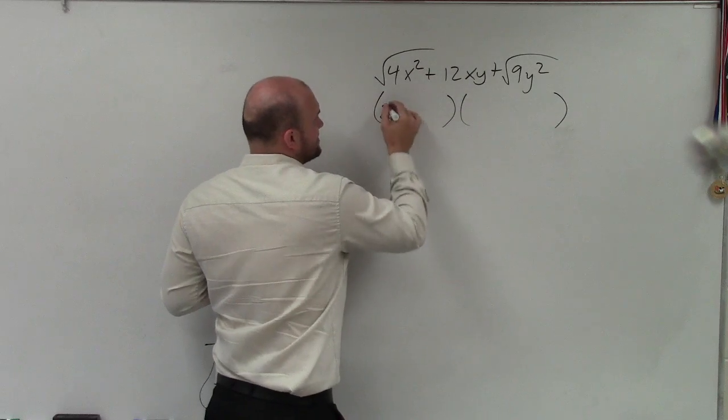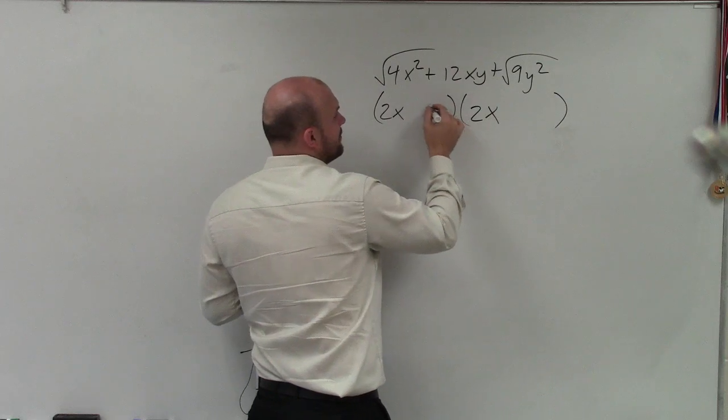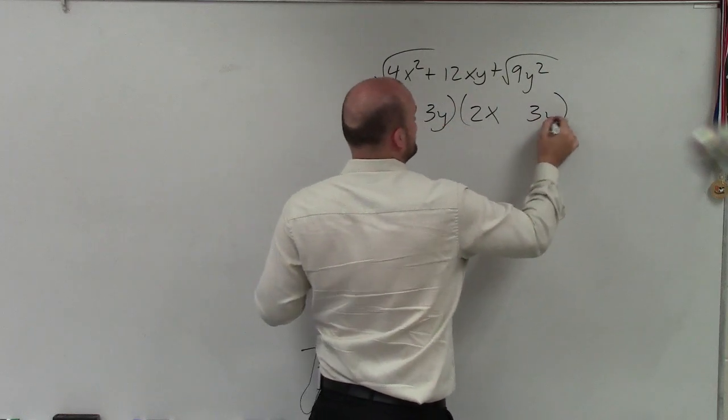This would be 2x, and that'd be 2x. Therefore, this would be 3y and 3y.